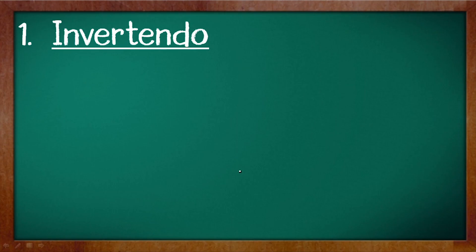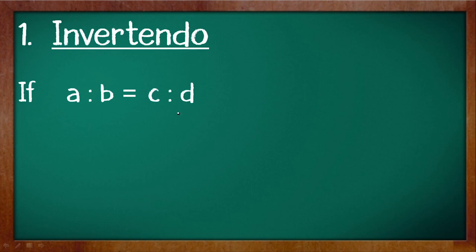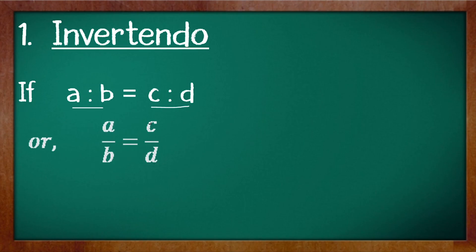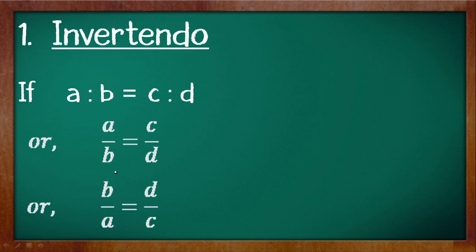Let us see the first property known as invertendo. In this property if there is a ratio a is to b equals to c is to d, and if we convert that into fraction form we get a by b is equals to c by d. We will just invert this fraction — take the denominator onto the numerator part and the numerator onto the denominator part of both the ratios.